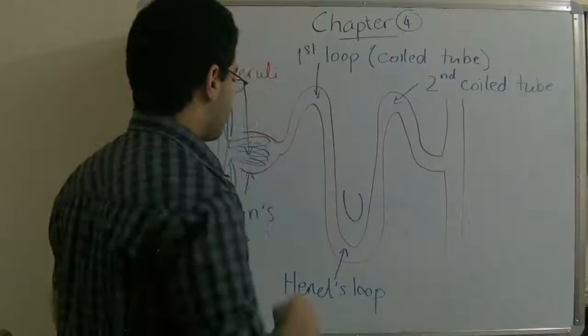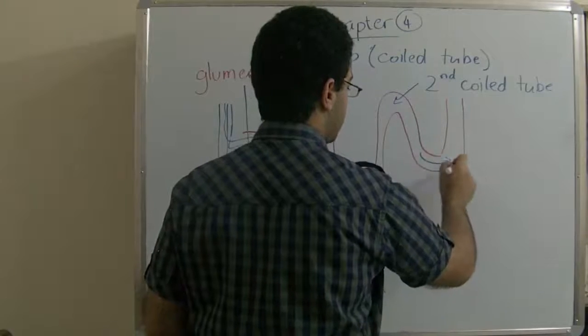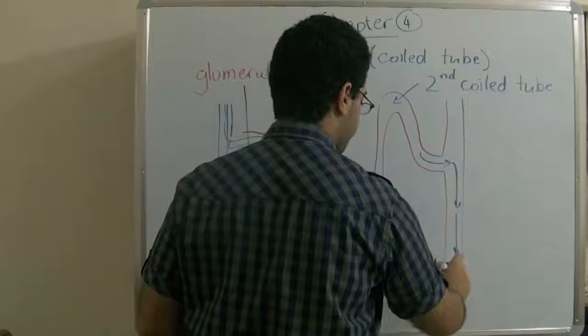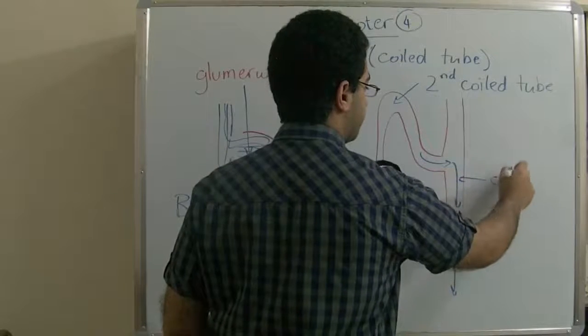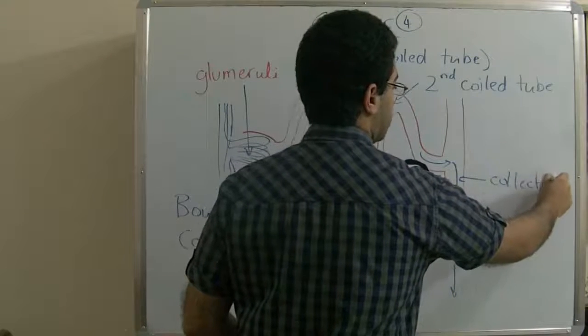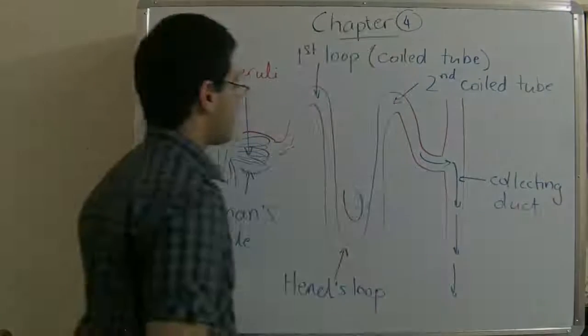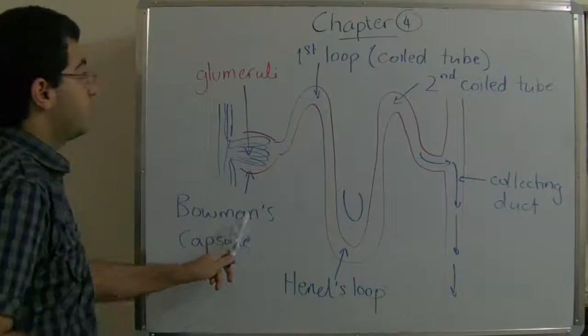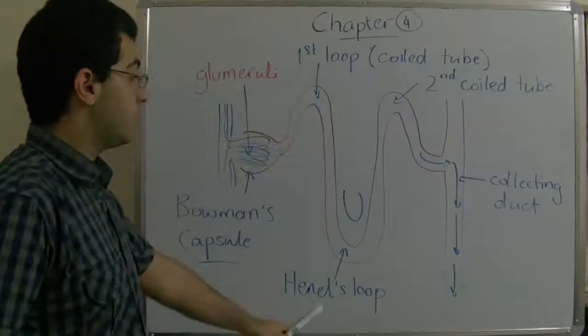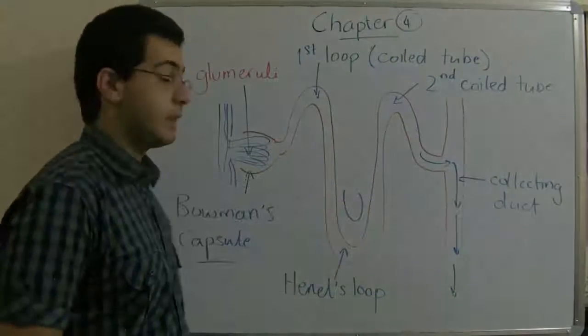Then after the blood is filtered, the urine enters through this duct, which is called the collecting duct, and it collects the urine. So Bowman's capsule, first loop, second loop, then the collecting duct.